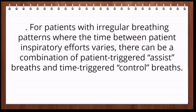For patients with an irregular breathing pattern, where the time between the patient's inspiratory efforts varies, there can be either assist breaths or control breaths because of this variation in patient-trigger timing. So in the case of an irregular breathing pattern, either assist or control breaths may be present. To determine which type of breath is occurring, look at the pressure-time curve: a downward deflection indicates an assist breath, and no downward deflection indicates a control breath.